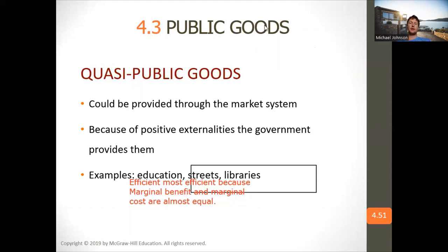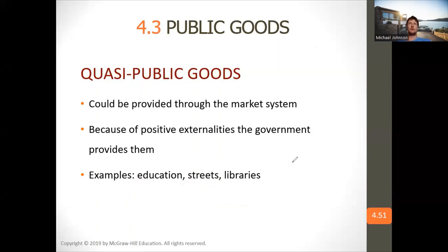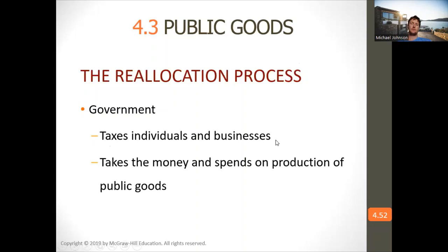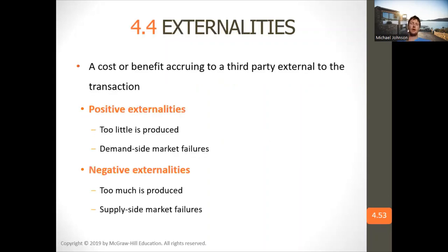Quasi-public goods can be provided through the market system because of positive externalities, but the government provides them. Examples are education, streets, and libraries. The government takes taxes from individuals and businesses and spends it on the production of public goods.